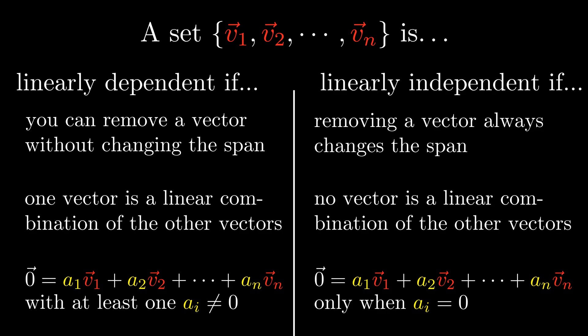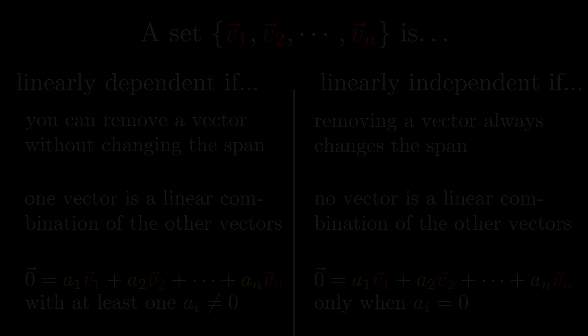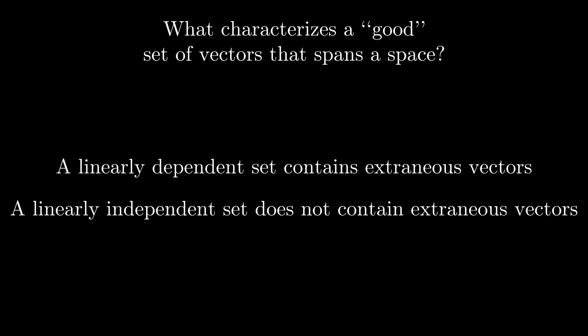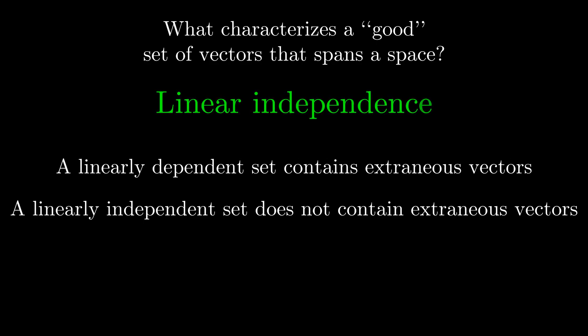If you are freaking out about having to remember six different definitions, here's the good news: you don't have to! While linear independence is an important concept in linear algebra, we actually aren't going to be using it that much, so any time I use one of these definitions, I'll restate it then. The important thing to remember is this fundamental concept: when it comes to the span of vectors, a linearly dependent set contains extraneous vectors, while a linearly independent set does not. So in light of this, let's go back to our initial question: what characterizes a good set of vectors that spans a space? The answer is linear independence, because a linearly dependent set contains vectors that are useless when it comes to the span. In fact, when it comes to spanning a space, linear independence is so important that it leads us to another definition.